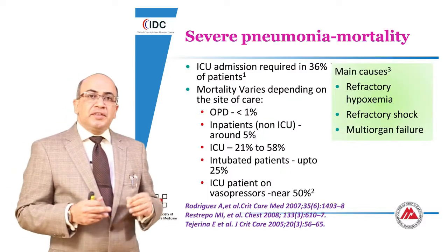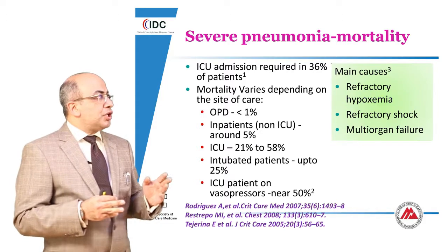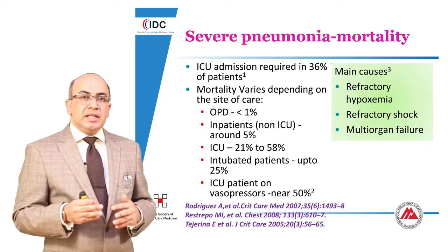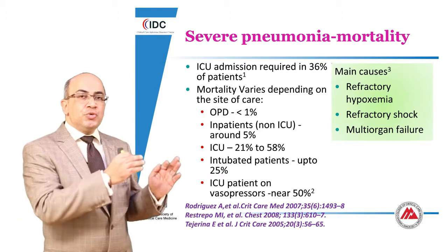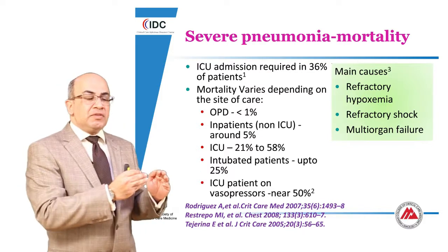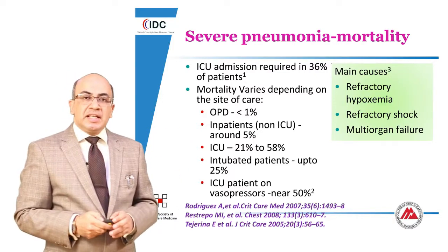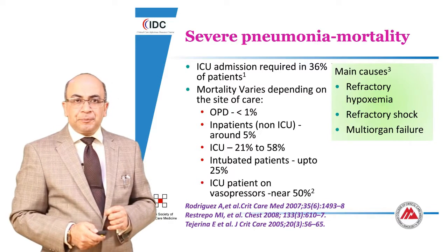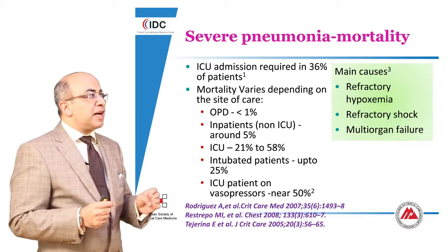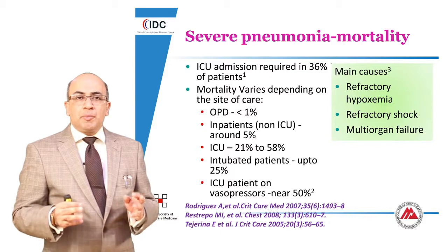This accounts for nearly 36 percent of patients ending up in the ICU, of which mortality varies depending on the site of care. The highest mortality is seen in patients admitted to the ICU who are on vasopressors and being ventilated, while mortality goes down for patients monitored in the wards. In the OPD, mortality is even lower, at less than 1 percent. Mortality usually occurs because of refractory hypoxemia, refractory shock, and multi-organ failure despite instituting appropriate treatment.